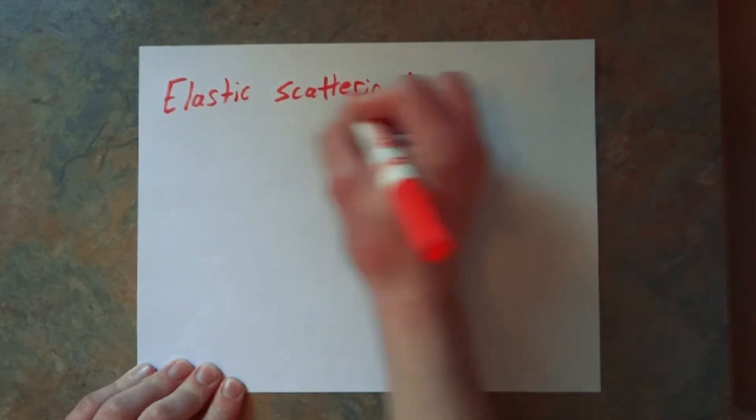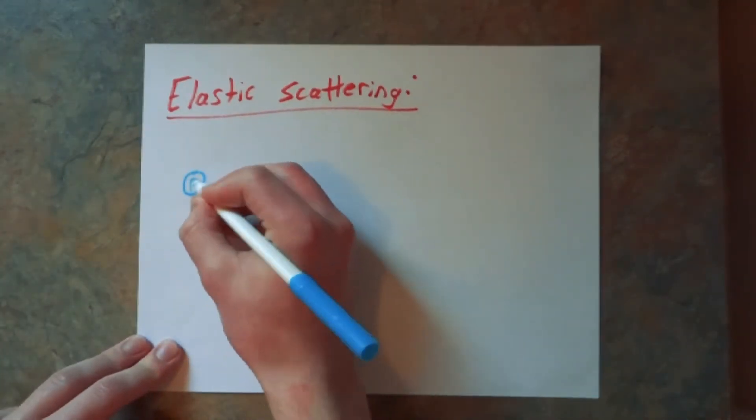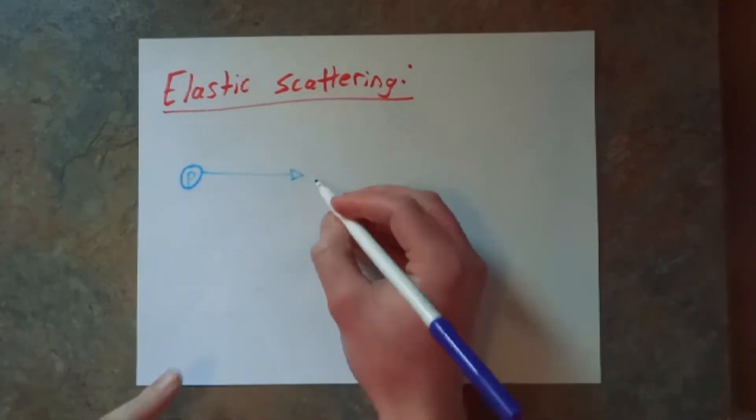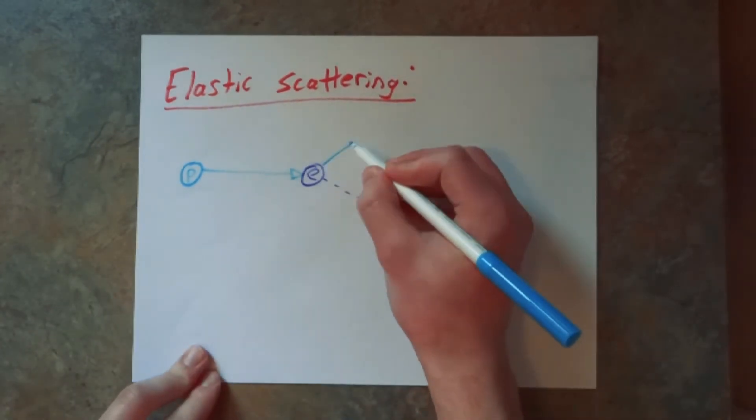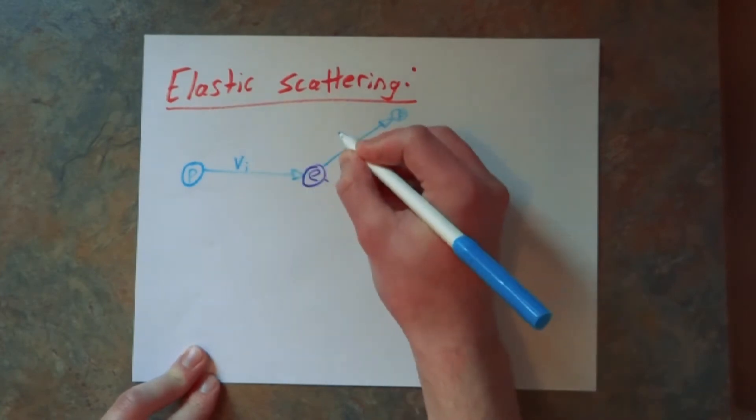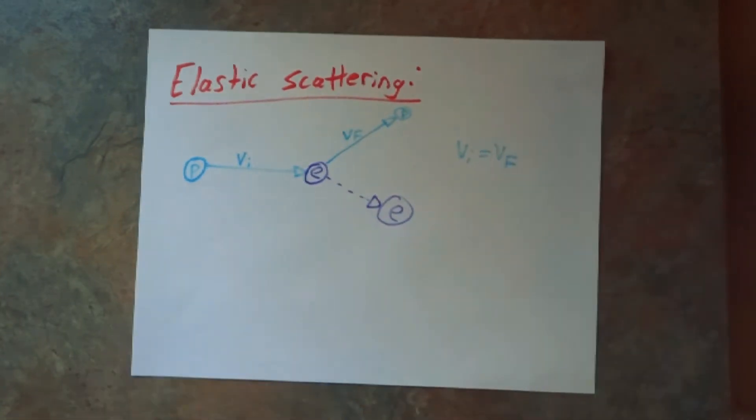However, in inelastic and elastic scattering, it's different. In elastic scattering, the initial velocity of the photon is equal to the final velocity of the photon. The electron takes no kinetic energy from the photon.